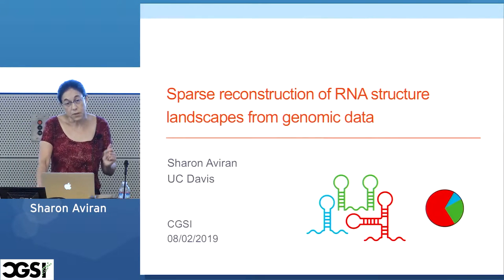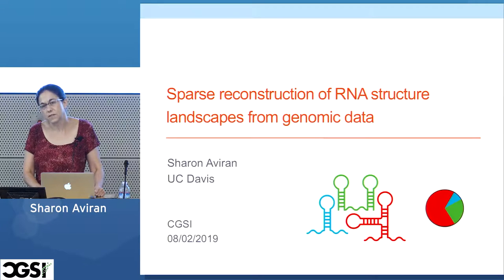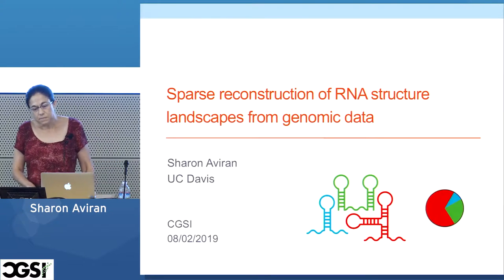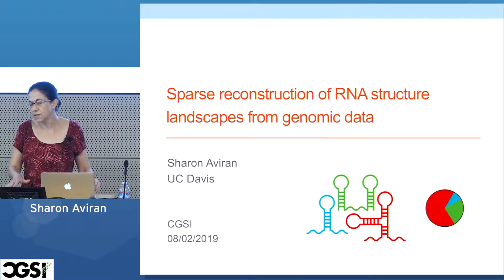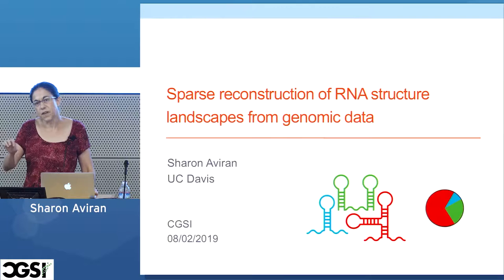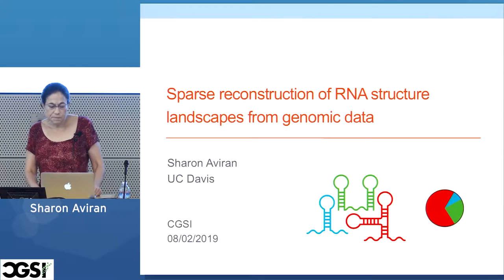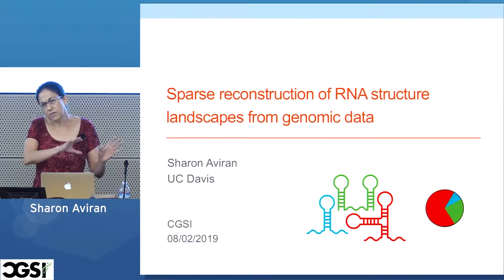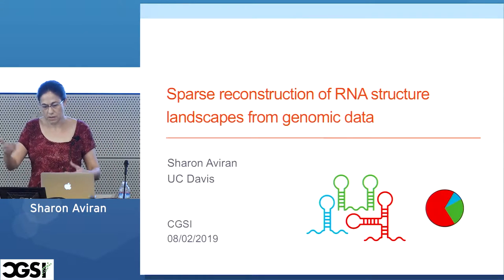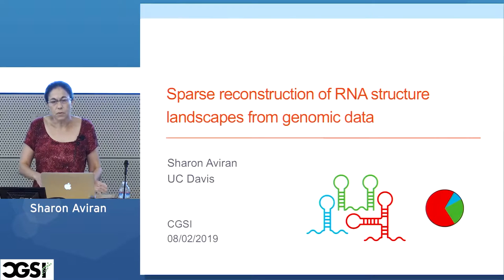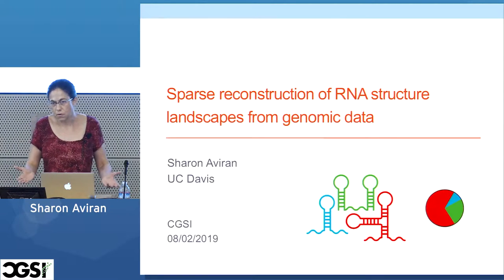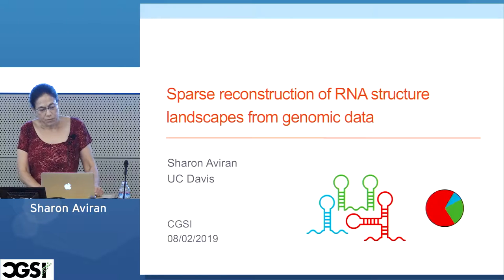Last year, when I visited CGSI, I talked about the first part. I presented a method that looks at genome-wide or transcription-wide data sets and tries to find places that are probably representative of certain structures, say hairpin, and directly from the data pull them out and test them. Now I'm going to talk about the second part: suppose we already know how to analyze the data — how do we predict structure?